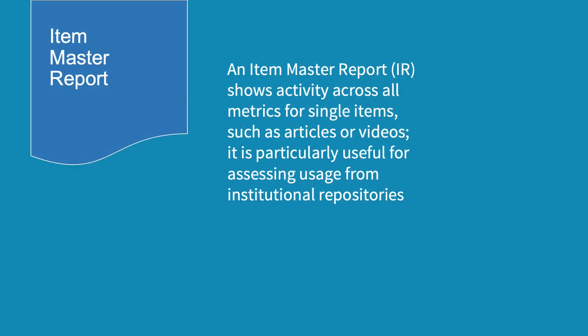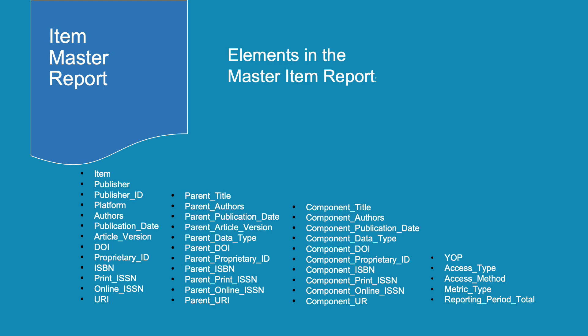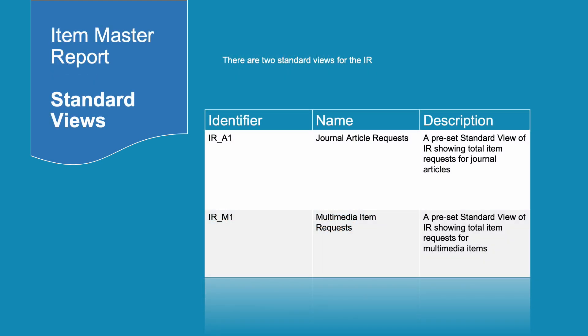An Item Master Report (IR) shows activity across all metrics for single items such as articles or videos, and is particularly useful for assessing usage from institutional repositories. An IR contains so much detail that it is not possible to show an example report — 39 column headings cover the item itself, its parent, and its component parts. IR A1 is Journal Article Requests, a standard view showing total item requests for journal articles, most likely used by institutional repositories. IR M1 is for multimedia item requests, showing total item requests for all multimedia items, most likely used by multimedia publishers.